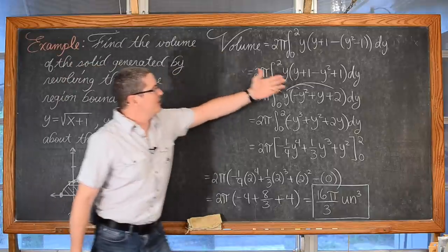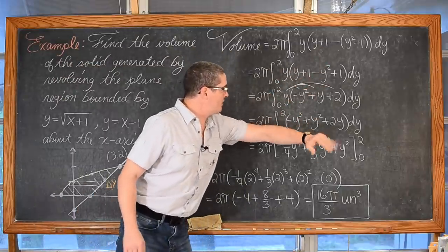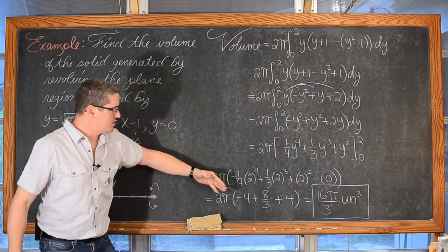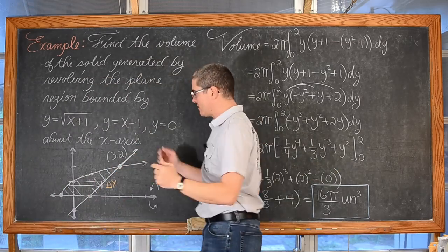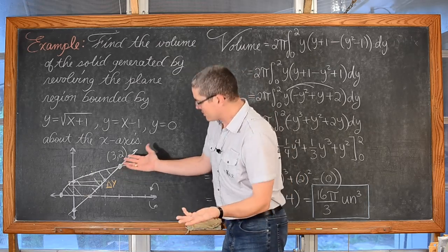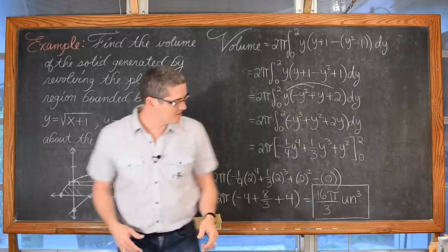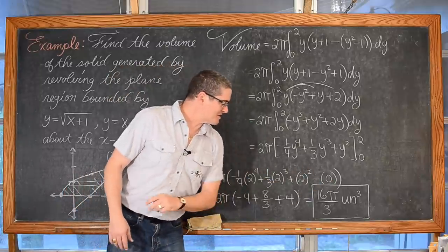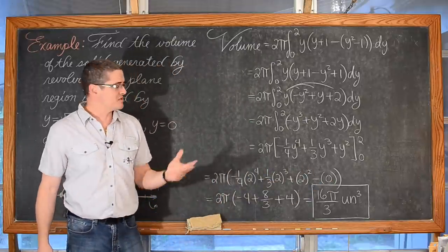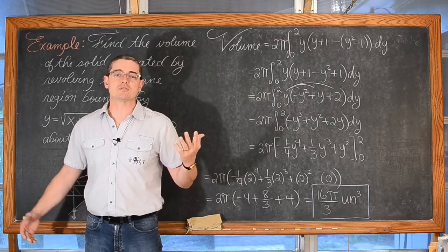We distributed the negative, distributed the y, combined like terms, did the integration, and our final answer for the volume of this solid comes out to be 16π/3 cubic units. That is the end of my last example and the end of my video. I'm Mr. Tarrou — BAM! Go do your homework!